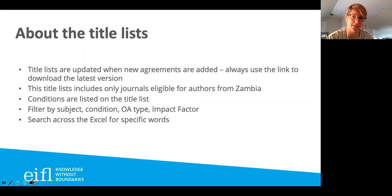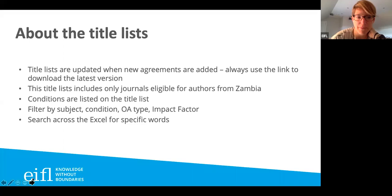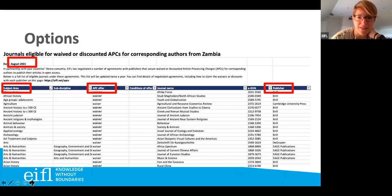What's important about the title list is that they get updated twice a year, or sometimes more often if a new agreement is signed. So please always use the link to make sure you have the latest version. This spreadsheet covers only journals relevant for authors from Zambia. You'll see conditions listed, different search options, when it was last updated — it was updated this month so it's quite recent.